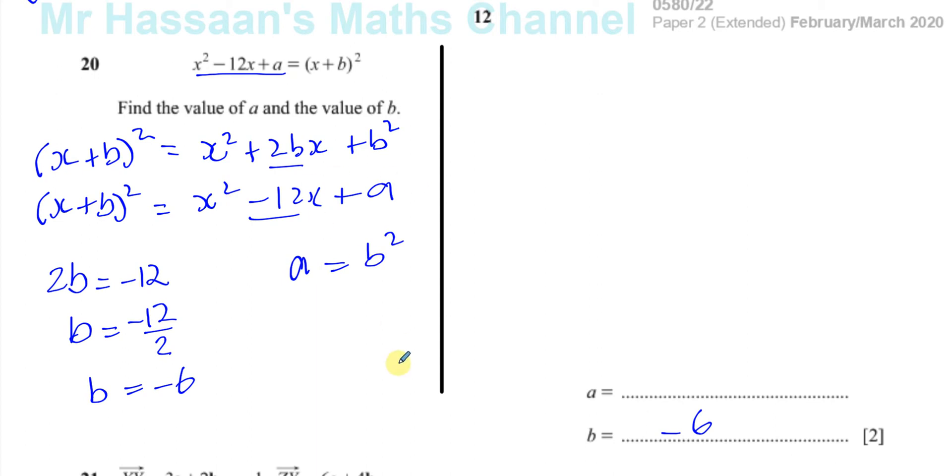That means a and b squared must be the same thing, because they're the constant that's left at the end of the expansion. So we know b is minus 6, so a must be negative 6 all squared, so a must be positive 36, because you square a negative term, you get positive. That's one way of doing it.